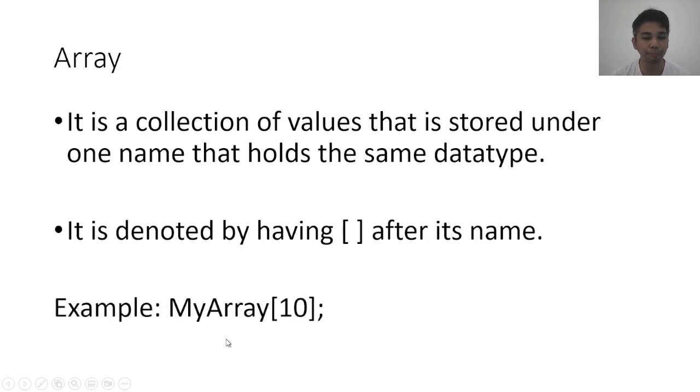It is denoted by having brackets after its name. Let's look at an example. Here we have myArray followed by the brackets, so it signifies that this word or keyword is an array. And it has a number inside the brackets, 10. So what are these different parts? The first one is the actual array name. So again, you may think of it as a variable. However, an array may contain different kinds of values, or it can contain many values. The array name is followed by the brackets. Inside the brackets is what we call its index.